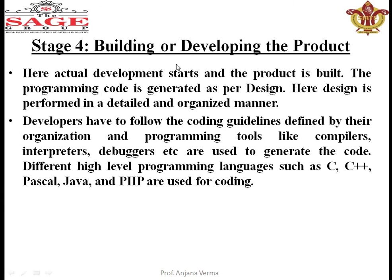After design is complete, development starts for the product. Programming code is generated as per the design. The design is performed in a detailed and organized manner so that the developer finds it easy to develop. Developers have to follow the coding guidelines defined by their organization and use programming tools like compiler, interpreter.